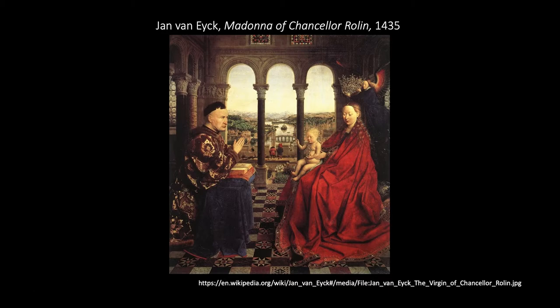One of the reasons Van Eyck could achieve these effects is his use of oil paint. It takes longer to dry than the tempera used in Italy at the time — days as opposed to hours — giving much more working time. Oil, because it can be used transparently, allows for layering. Van Eyck perfected a system of underpainting and glazes: he would render his whole painting in grisaille — grayscale — getting the lights and shadows right, then add color in a second stage with layers of transparent glazes.